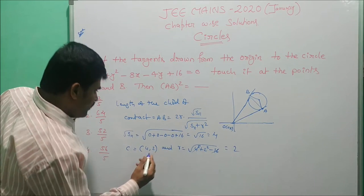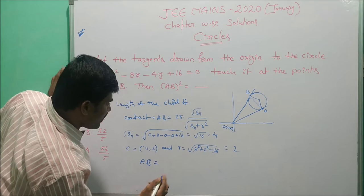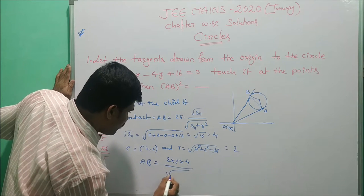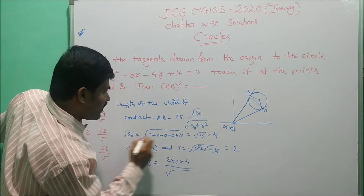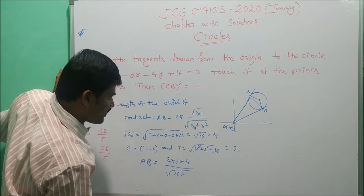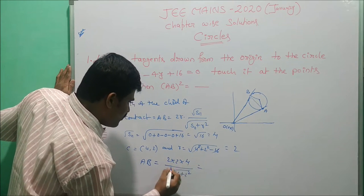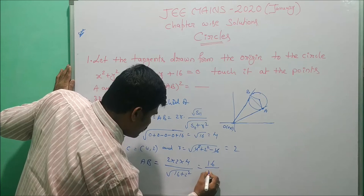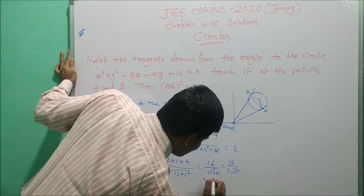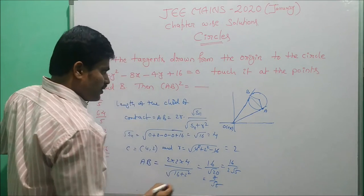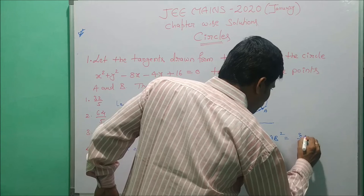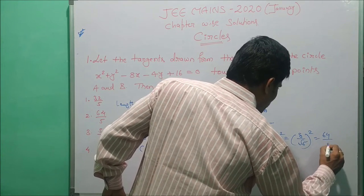Now substituting these values in the formula: AB = 2 × 2 × 4 / √(4² + 2²) = 16 / √(16 + 4) = 16 / √20 = 16 / (2√5) = 8/√5. Therefore AB² = (8/√5)² = 64/5.